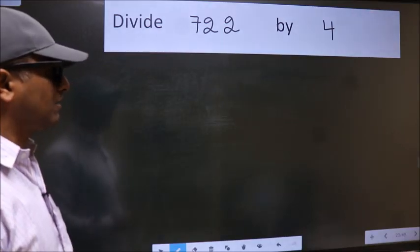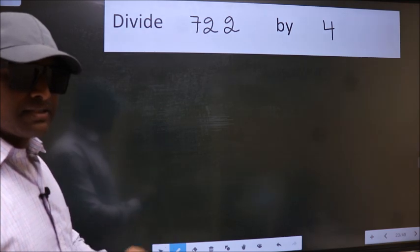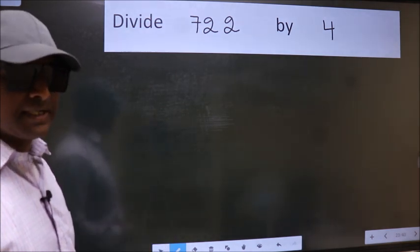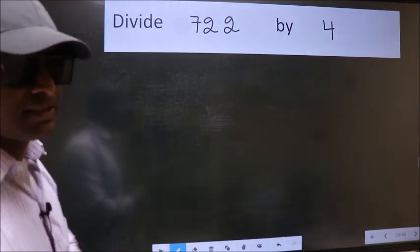Divide 722 by 4. While doing this division, many do this mistake. What is the mistake that they do? I will let you know. But before that, we should frame it in this way.